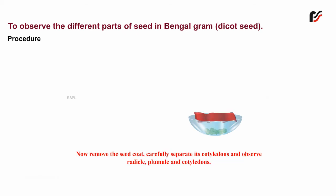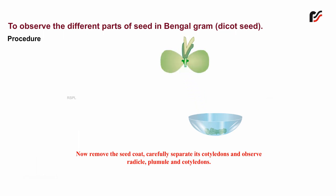Now remove the seed coat, carefully separate its cotyledons, and observe the radicle, plumule, and cotyledons.